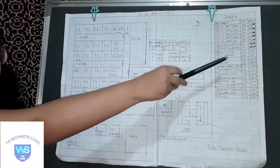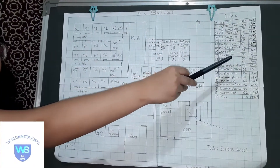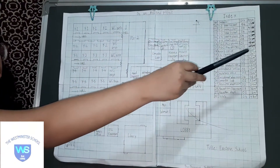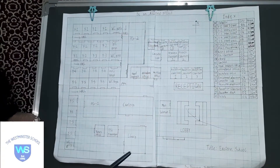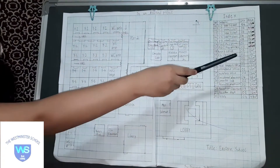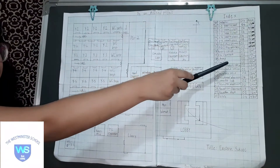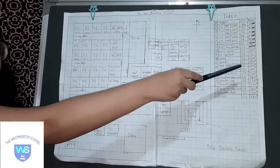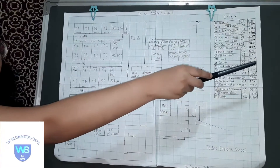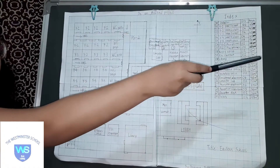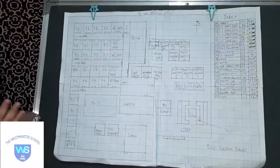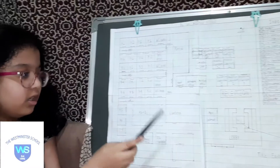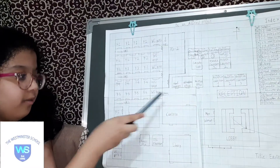We have the library — quantity 1, 42 meter square as its area — which is over here. Then we have the canteen, quantity 1, 150 meter square as its area, and it is the largest room in this blueprint. It's over here.